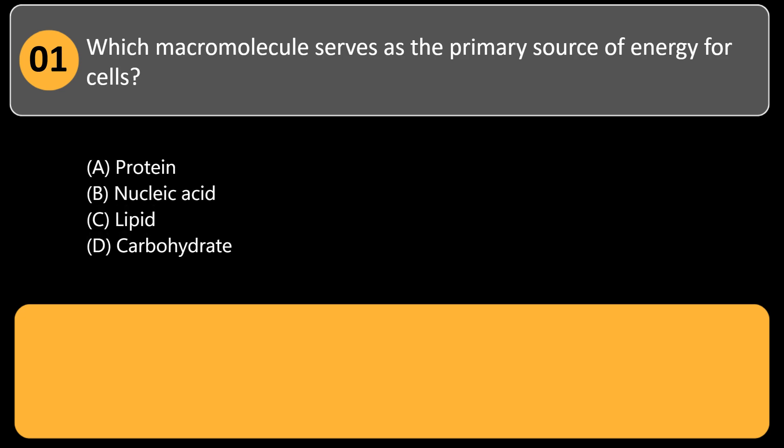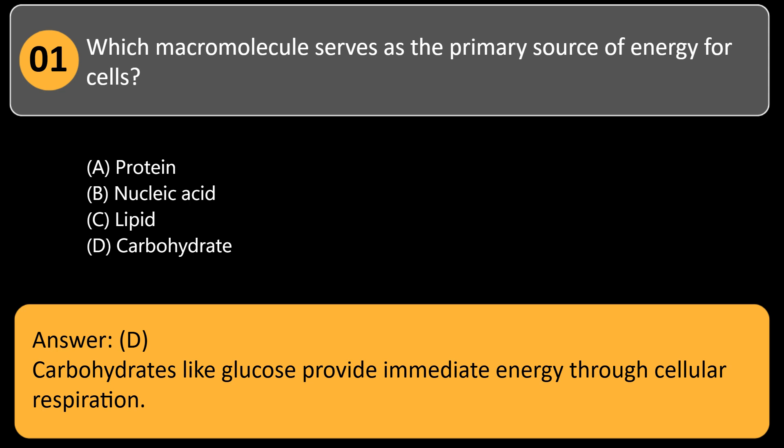Which macromolecule serves as the primary source of energy for cells? A. Protein, B. Nucleic acid, C. Lipid, D. Carbohydrate. Answer: D. Carbohydrates like glucose provide immediate energy through cellular respiration.